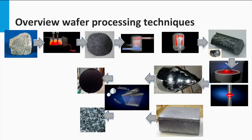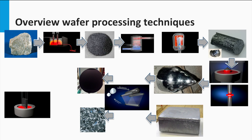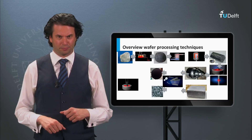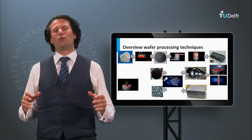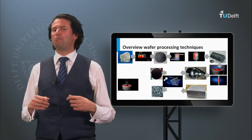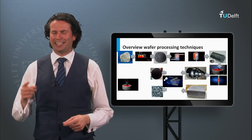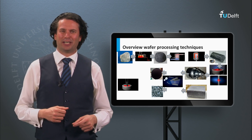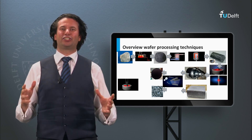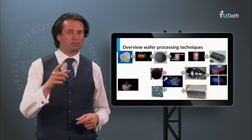Multicrystalline ingots are made using a casting method. Wafers are made by sawing these ingots. A method which does not have any kerf losses is the so-called silicon ribbon approach. Now we know how we make the wafers — in the next block we will discuss the design rules for making solar cells.